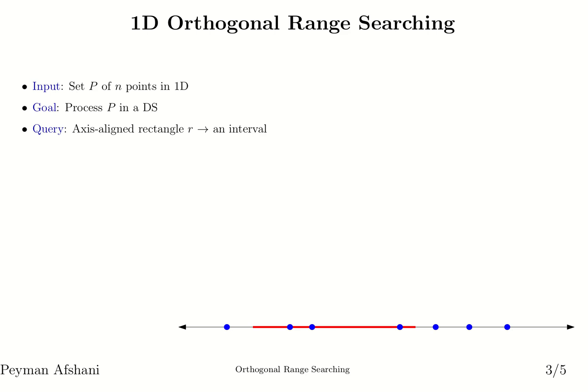Now let's look at some solutions for some of the orthogonal problems that we defined. We start with one-dimensional orthogonal range searching. In this problem we have a set of endpoints in one-dimensional space, so on a line. In other words, the input points are just a set of numbers. We store them in a data structure and the queries we're going to be answering are axis-aligned rectangles, but in one dimension an axis-aligned rectangle is nothing but an interval, as shown here.